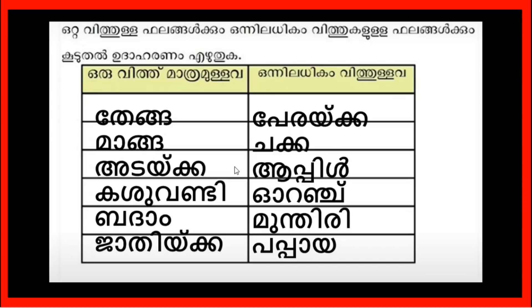Examples of fruits include: Mango, Cashew, Almond, Nutmeg — these are fruits with one seed. Jackfruit, apple, orange, papaya — these are fruits with more than one seed.